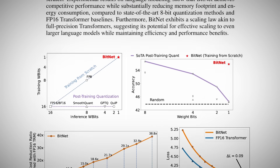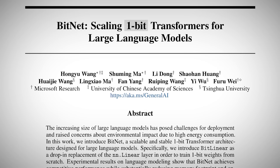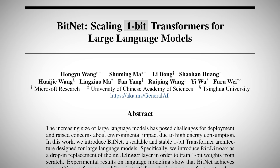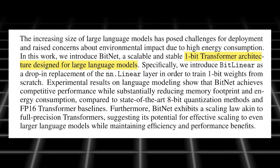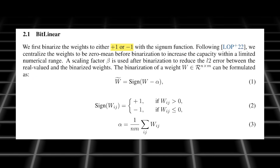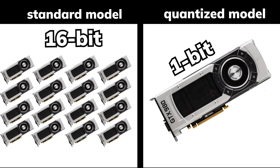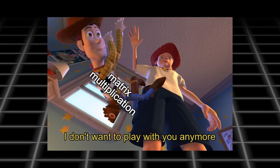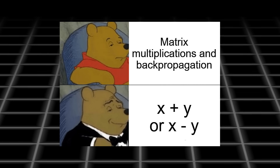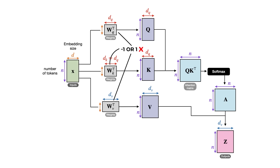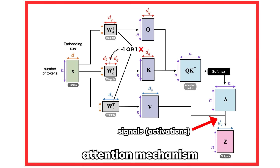The idea was first proposed back in October 2023 in a research paper called BitNet: Scaling 1-bit Transformers for Large Language Models. They suggest having an LLM with only 1-bit weights, representing only 1 or negative 1. This potentially requires 16 times less storage than a standard model, and removes the need for matrix multiplications since simple addition and subtraction are enough for only two numbers. However, it is impossible to convert all weights into 1-bit, especially weights for the attention mechanism and activations passed between layers.